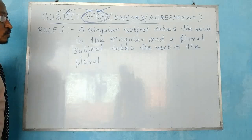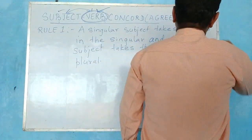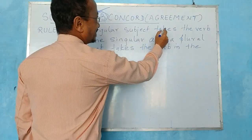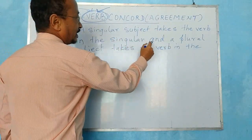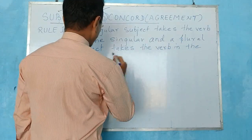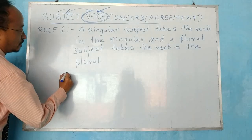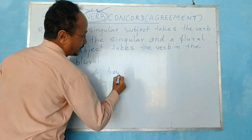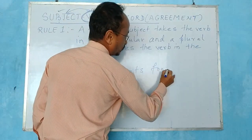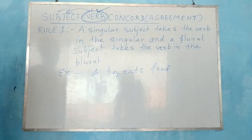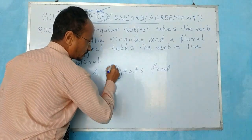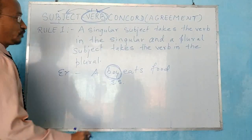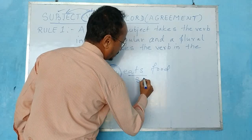My dear students, let's start with the rules which cover the construction of a sentence. Rule number one: a singular subject takes the verb in the singular, and a plural subject takes the verb in the plural. For example, 'A boy eats food.' Here the person we are talking about is a boy. He is the subject. It is a singular subject, so the verb which follows it has to be singular — that is, a singular verb.